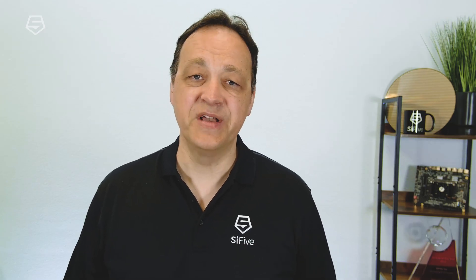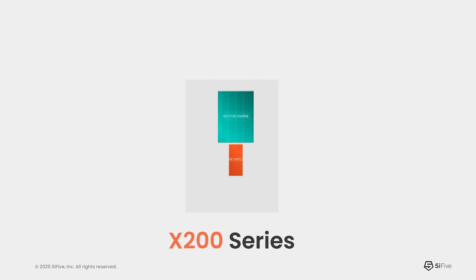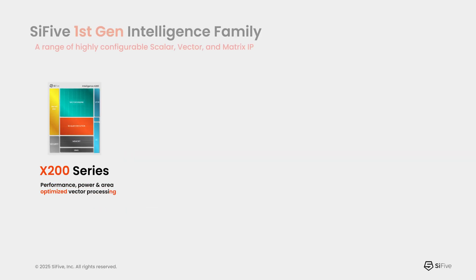At Sci-5, we saw this interest in RISC-V in AI. Four years ago, we introduced the first generation of our intelligence family, beginning with the X280 core in the X200 series. This is an efficient scalar core coupled with a wide vector unit, and we found it was being adopted in a lot of places, with many design wins being used in AI SOCs.